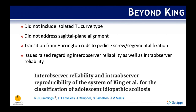Problems with the King classification: most importantly, it was based on Harrington rod instrumentation, and shortly after publication there was a transition to pedicle screw segmental fixation. It did not address sagittal plane alignment, did not include an isolated thoracolumbar curve type, and multiple studies raised concern regarding intra-observer and inter-observer reliability.